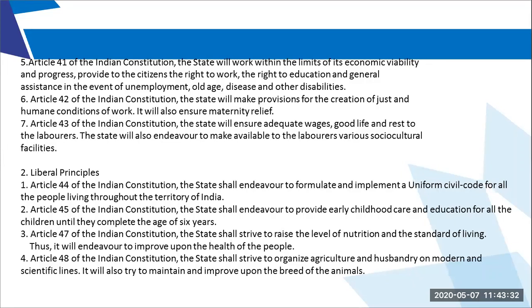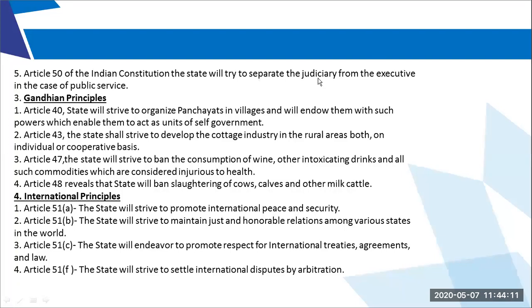We also have certain liberal principles which tell us about how citizens of a country have to be governed and that there has to be a uniform civil code. Once the Directive Principles are followed by the government, we can ensure smooth governance and a socialist kind of society or setup as given in the preamble of our country.